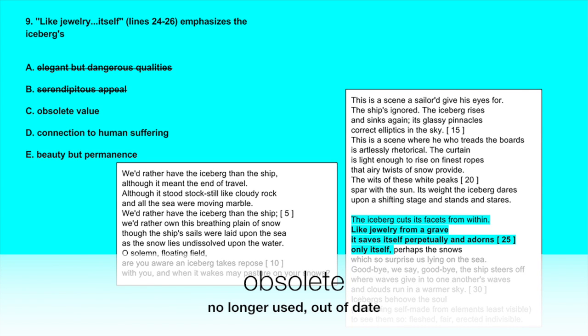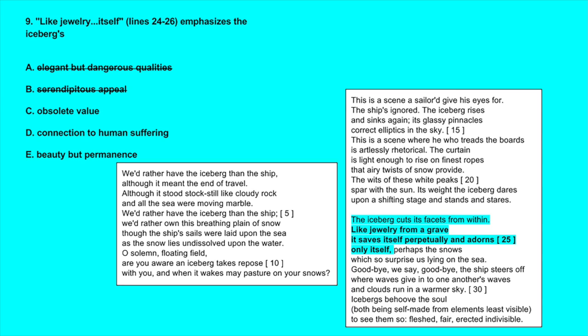Jewelry from a grave would still have value, so it wouldn't be considered obsolete, and this won't work. D, connection to human suffering - there isn't anything specifically about jewelry from a grave that connects the iceberg to human suffering. This doesn't make sense either, cross out D.